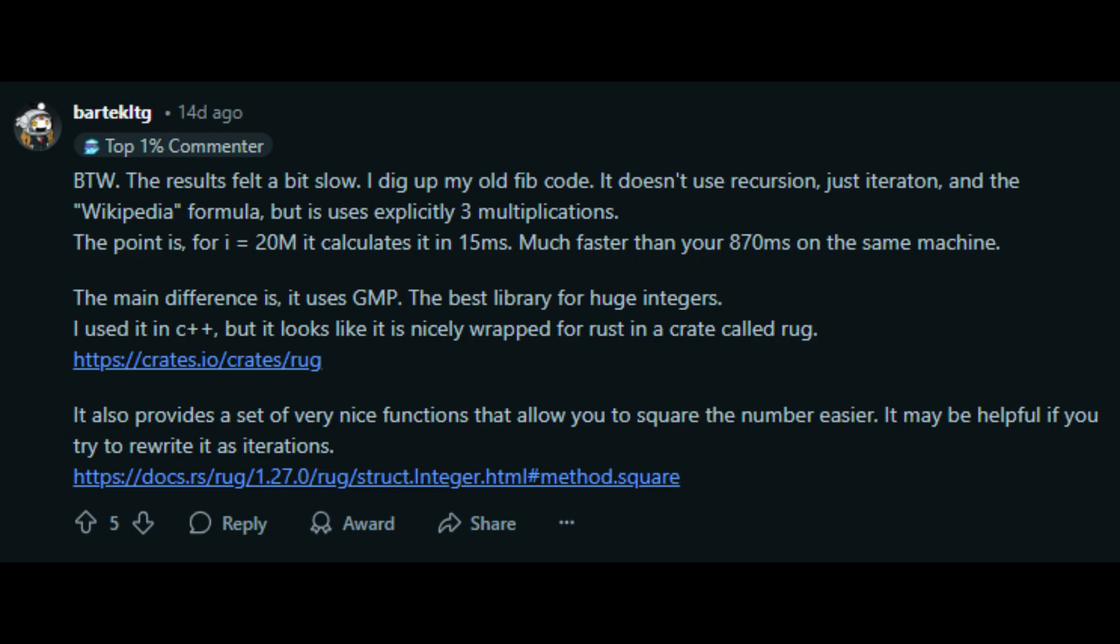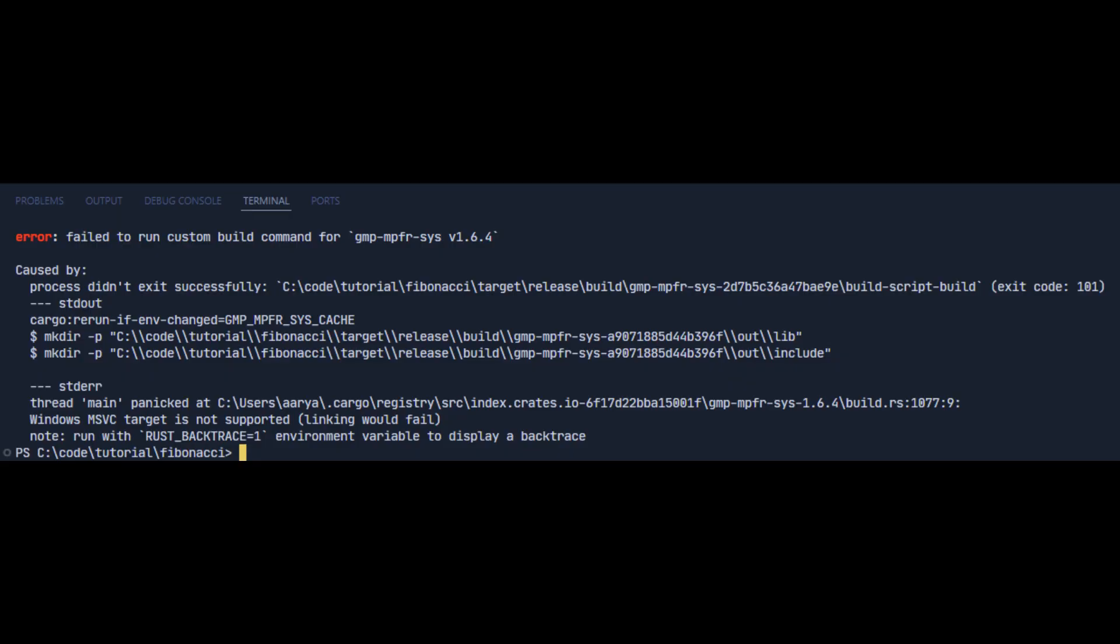Now it's important to note that calculating the Fibonacci numbers this way is highly dependent on the efficiency of the big integer implementation as well. As mentioned by some users on my Reddit post, using GMP through RUG produces much better results, but I had trouble installing it on Windows so I gave up on the idea.